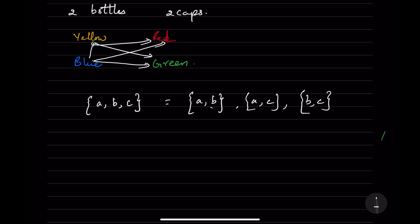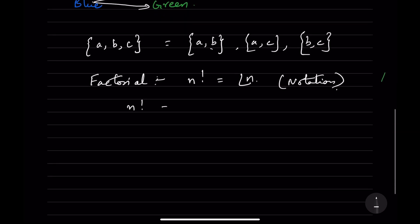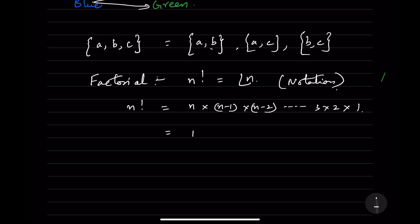Now we will see what is a factorial. Factorial plays a very important role in permutations and combinations. Factorial is denoted as n! or factorial n. We can write it as n into (n−1) into (n−2) and so on up to 3 into 2 into 1. It can also be written from the other side as 1 into 2 into 3 and so on up to n.